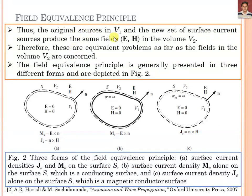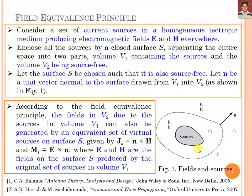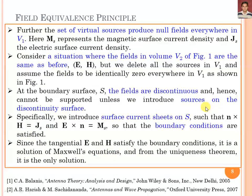Thus, the original sources in V1 and the new set of surface current sources produce the same fields E and H in volume V2. We can say that by using the equivalent sources on the surface, we can produce the same electric and magnetic fields E and H outside V1 — that is, in volume V2 with the same values. This is known as the field equivalence principle.